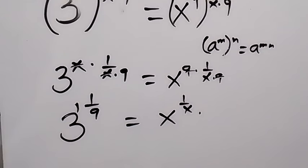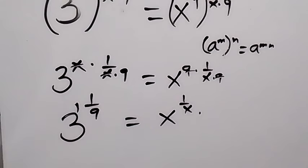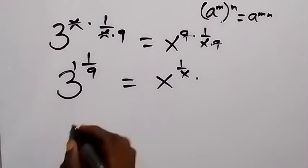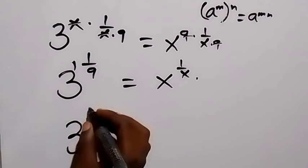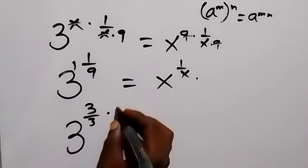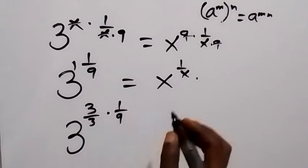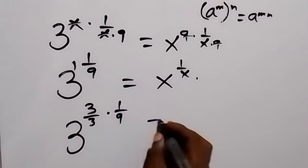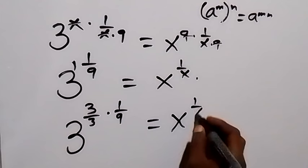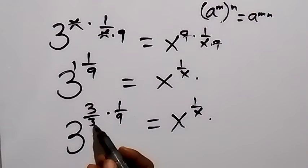So 3 raised to the power 1 is 3. This can be written in another way as 3 raised to the power 3 over 3, then times 1 over 9, which equals x raised to the power 1 over x. And here we can also separate this and write it in another way.